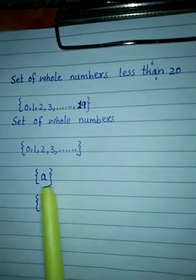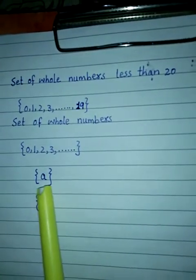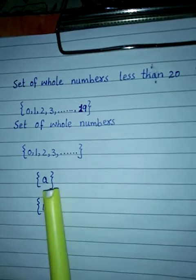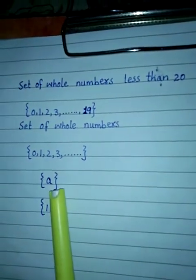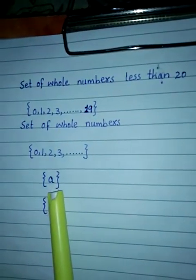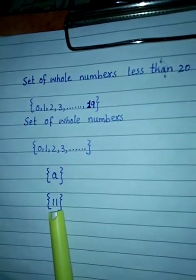An infinite set is a set which contains an infinite or unlimited number of objects — یہ definition آپ اپنی books پر highlight کریں۔ Next type: unit set۔ جیسا کہ نام سے پتا چلتا ہے، اس میں صرف ایک element ہوتا ہے۔ Unit set is a set that contains only one element۔ Unit set کو singleton set بھی کہتے ہیں۔